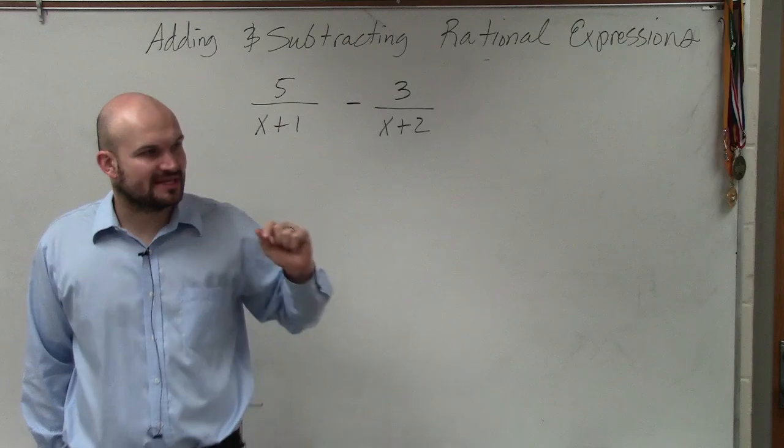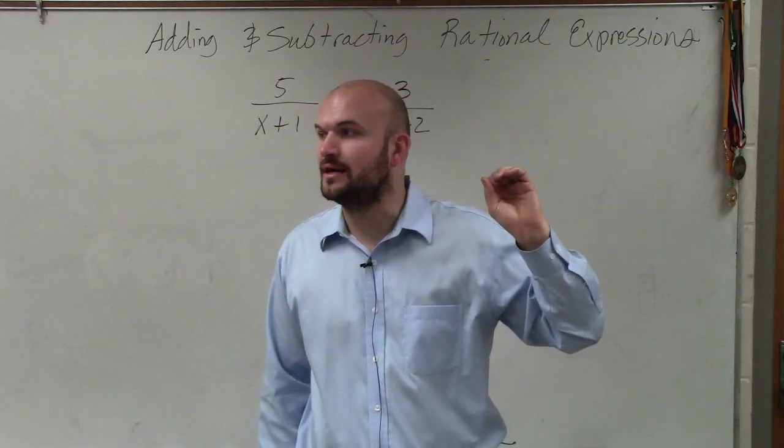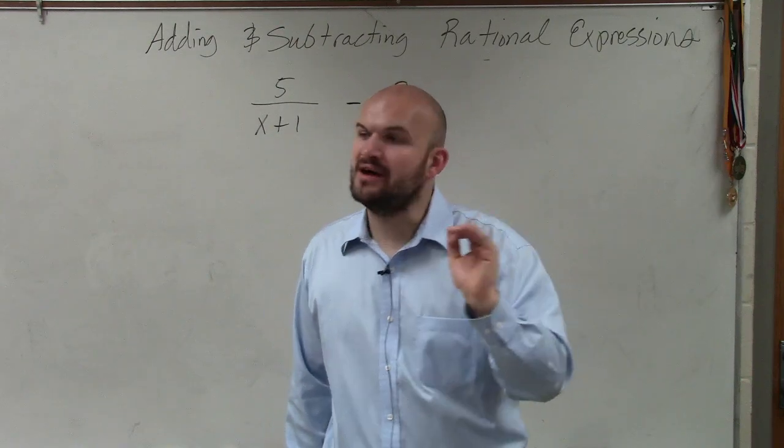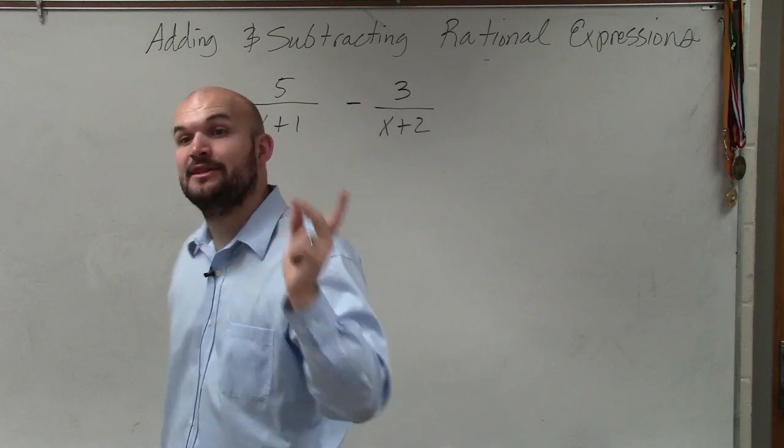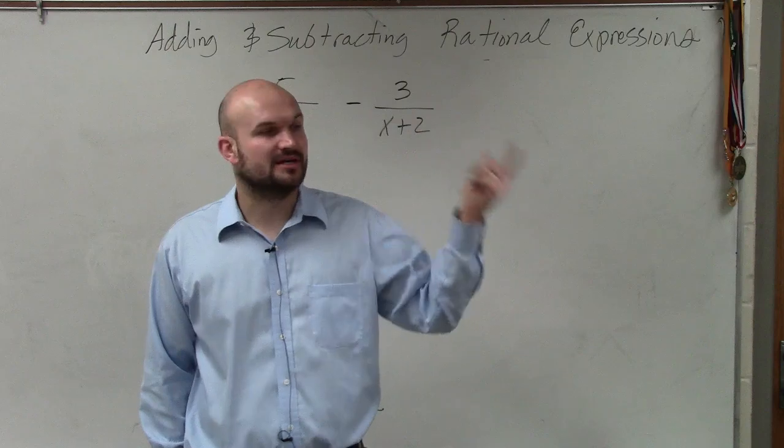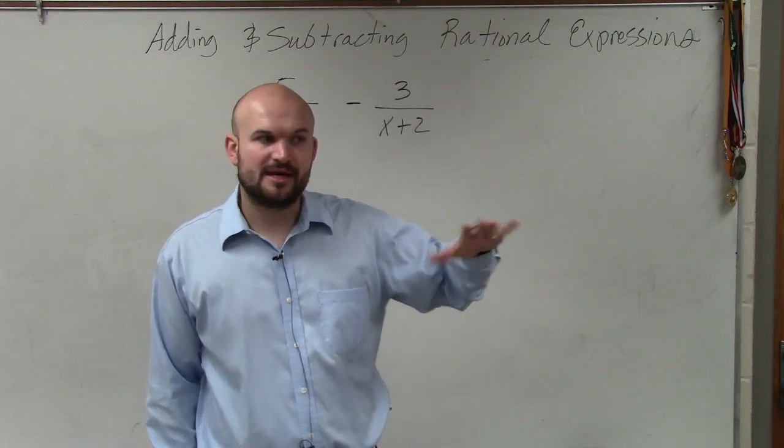However, that's not always the case. For instance, the common denominator of 9 and 2 is 18. You multiply them. However, the common denominator of 9 and 3 is not 27. The common denominator of 9 and 3 is actually 9, because 3 also divides into 9. Does that make sense? So you have to be careful.